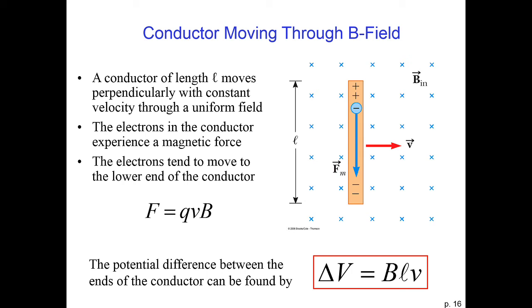If the force on a positive charge points up, then the force on a negative charge will feel a force that points down. As the conductor moves to the right, there will be a charge separation where the positive charges move up and the negative charges move down. Essentially, your electrons will then move to the bottom of your conductor.